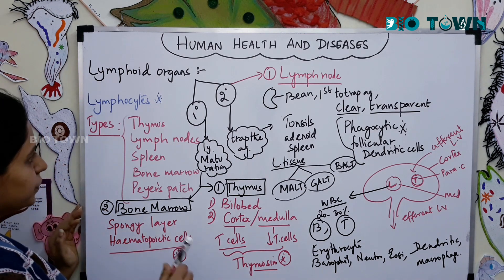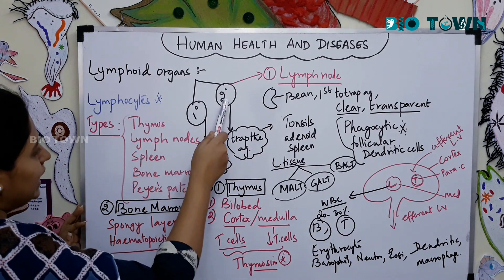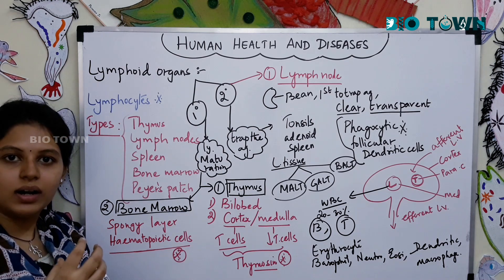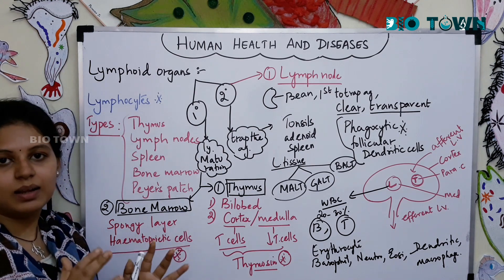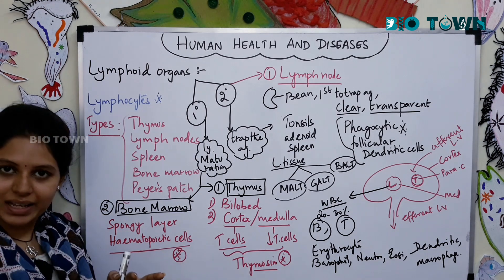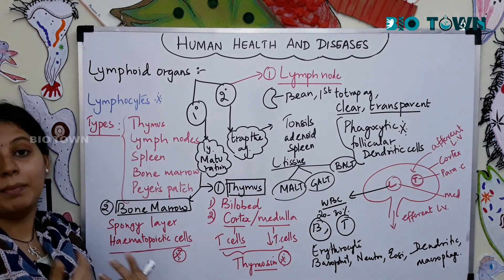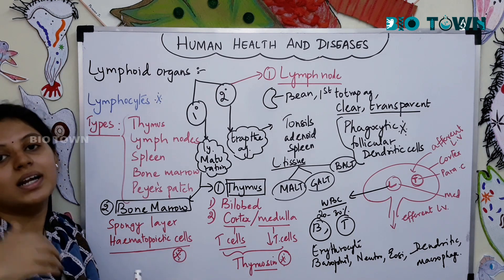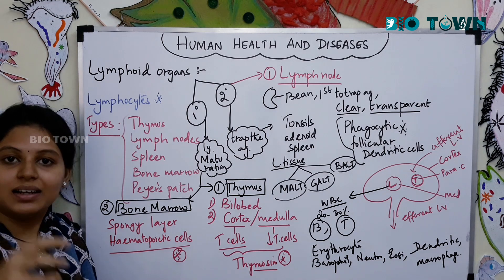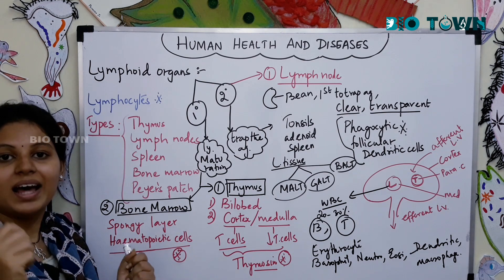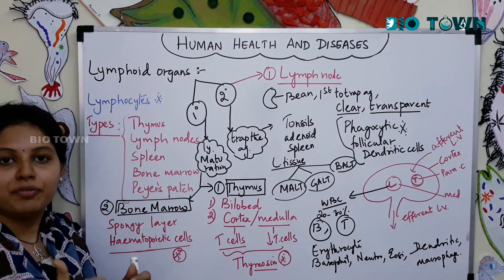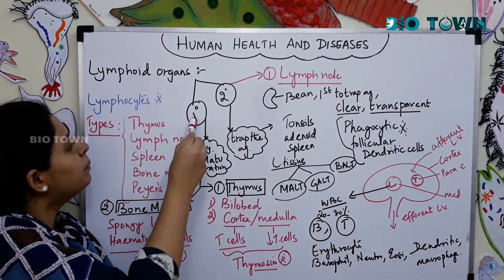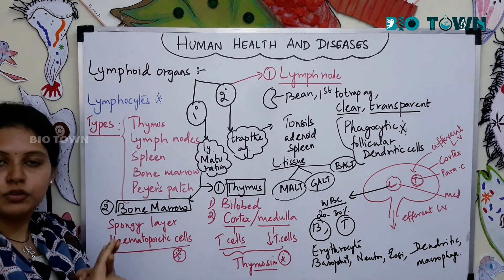Lymphoid organs are divided into primary and secondary types. Primary lymphoid organs are called central lymphoid organs — these are places where lymphocytes actually mature and grow. Secondary lymphoid organs, also called peripheral lymphoid organs, are where lymphocytes go into action and start fighting or defending against antigens entering the body.